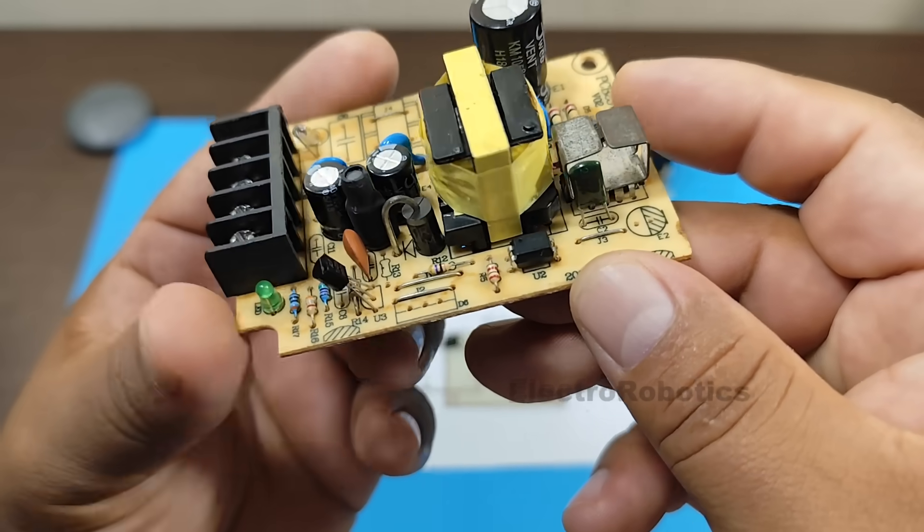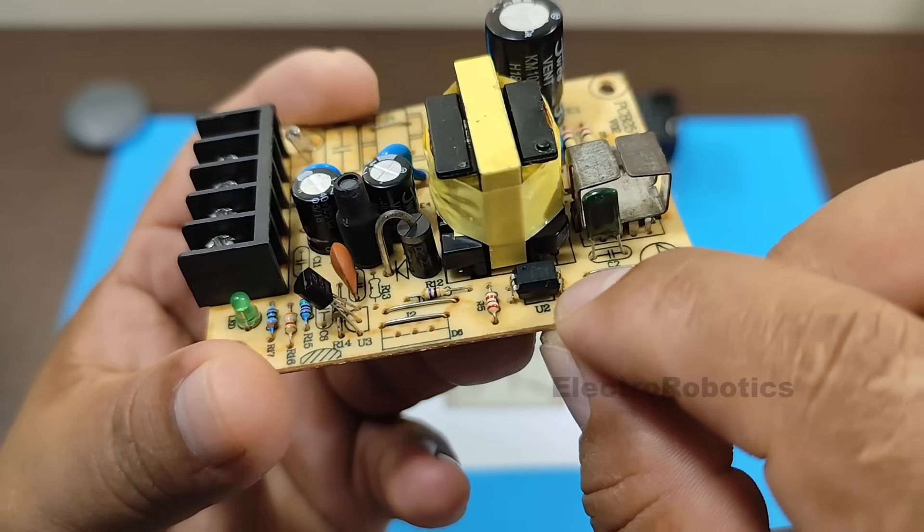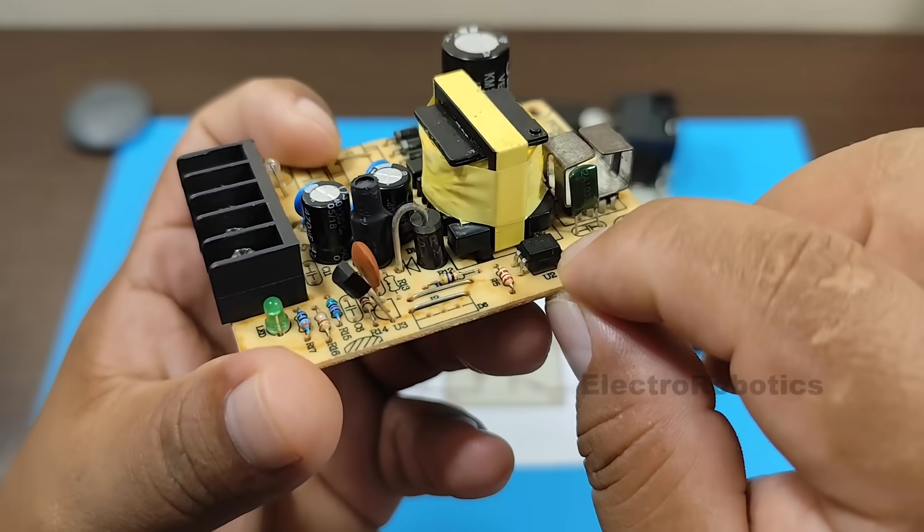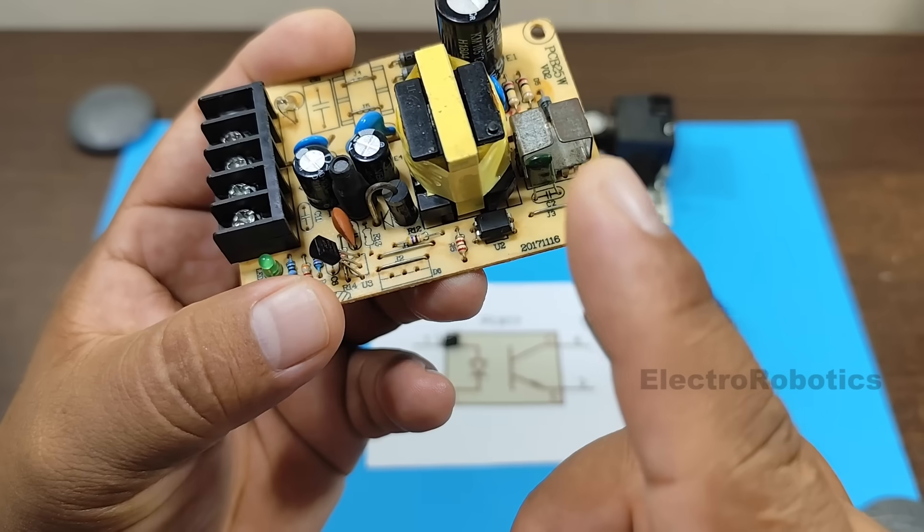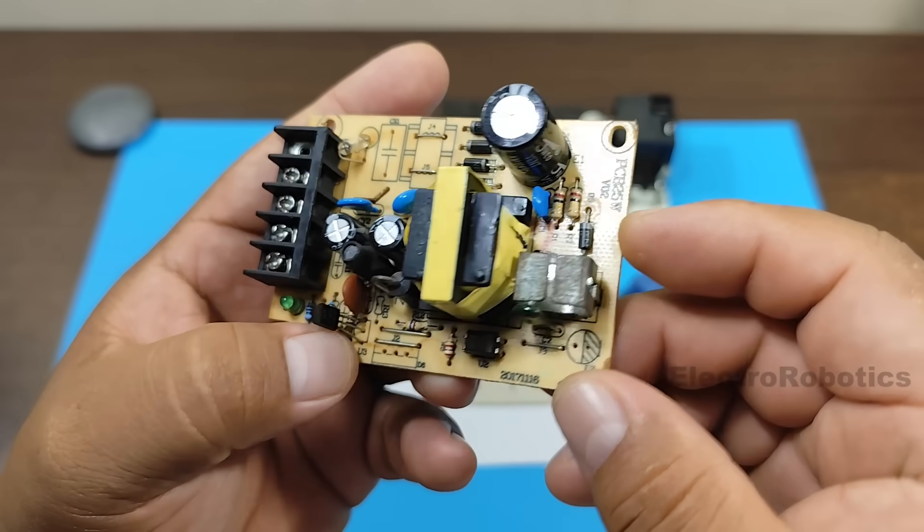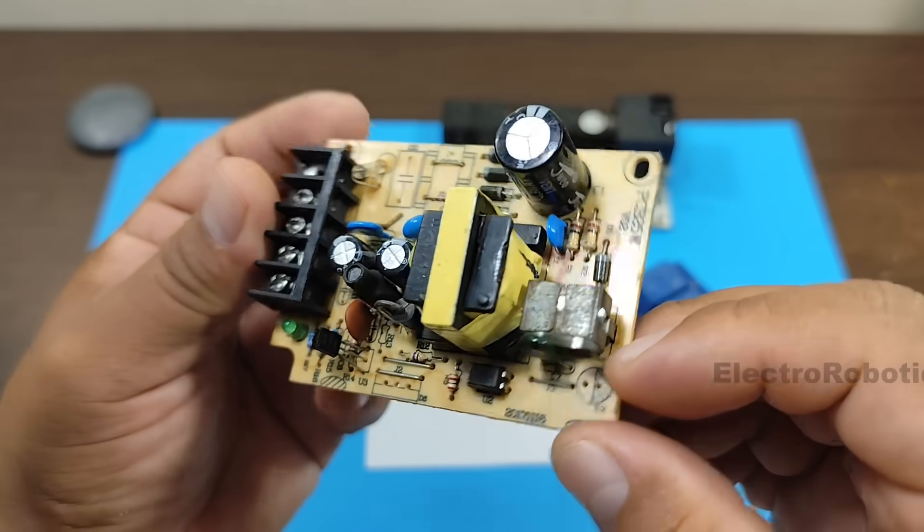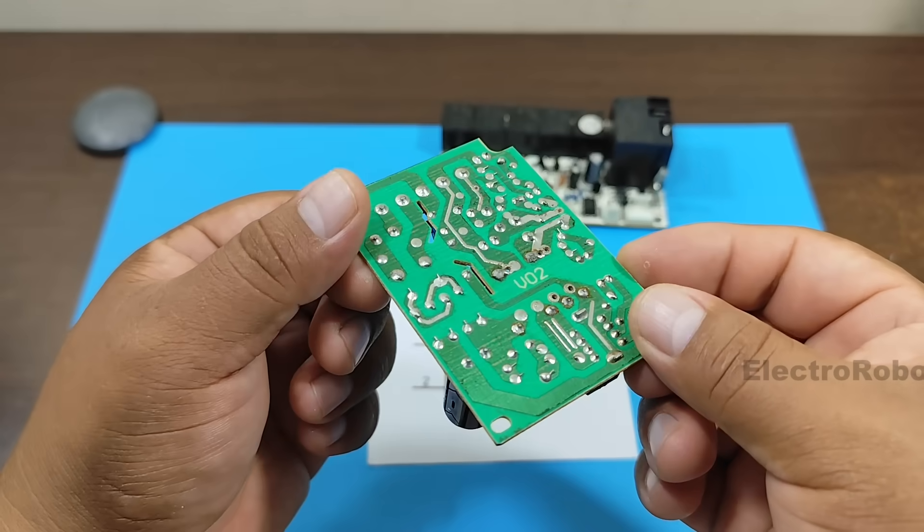You'll also find it in power supplies. As we can see here, this is the same optocoupler. And it's responsible for separating the high voltage from the low voltage. And thanks to it, the electronic board can function without any problems.